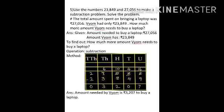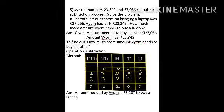6 minus 9 is not possible — always the bigger number goes on top and the smaller number below. So 6 becomes 16 by borrowing from the 10s, and 16 minus 9 is 7. The 10s gave 1, so 5 becomes 4, and 4 minus 4 is 0. Then 0 minus 8 is not possible, so borrow from the 1,000s — 0 becomes 10, and 10 minus 8 is 2. In the 1,000s place, 7 gave 1 to the 100s so it becomes 6, and 6 minus 3 is 3. And 2 minus 2 is 0. So the more amount needed by Vyom is Rs. 3,207 to buy a new laptop.